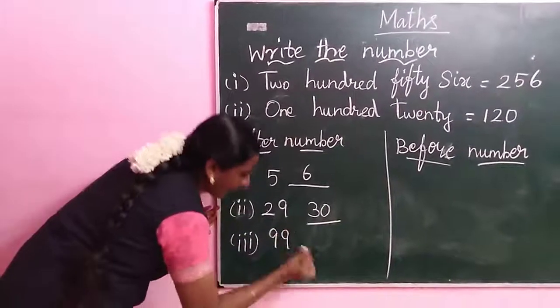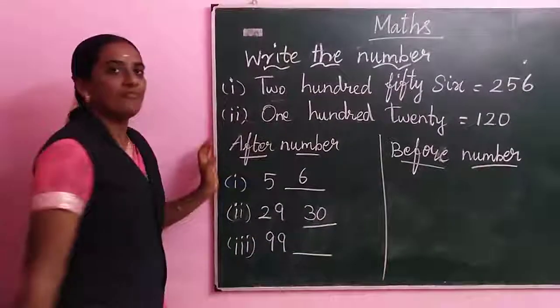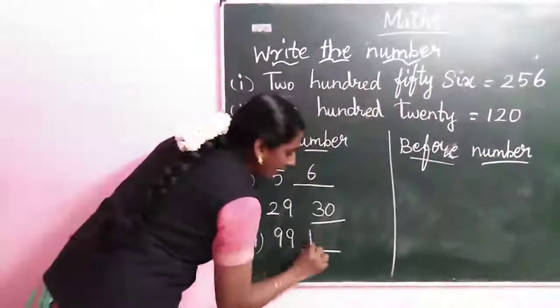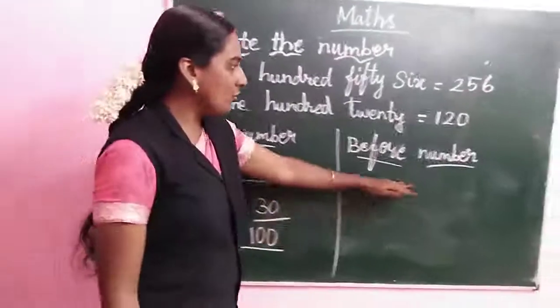99. What is the 99 after? So very, very easy answer. 99 after is 100. Next, going to before number.